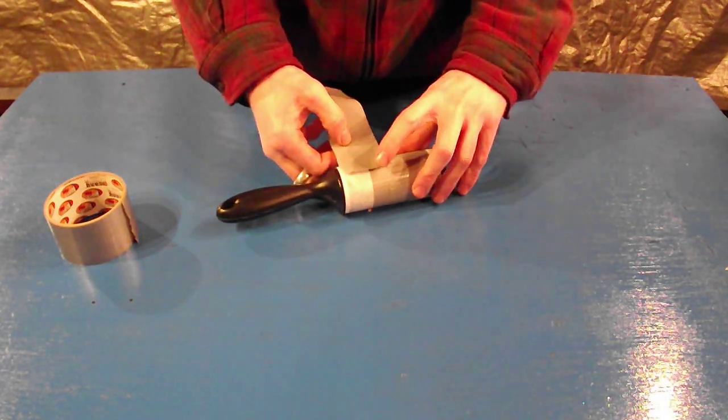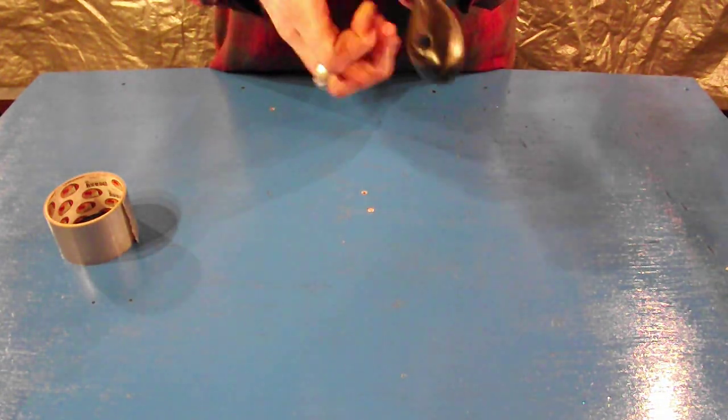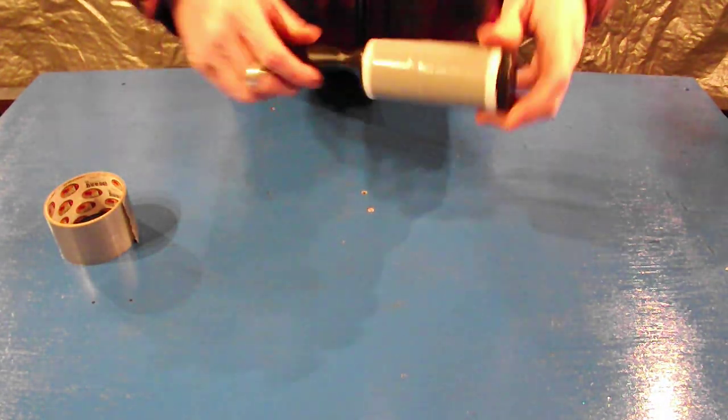I'm going to line up the seams and I'm making it much easier to remove. Remove it like one sheet, just like a normal lint roller. And there you go.